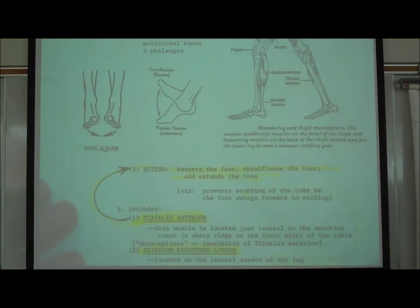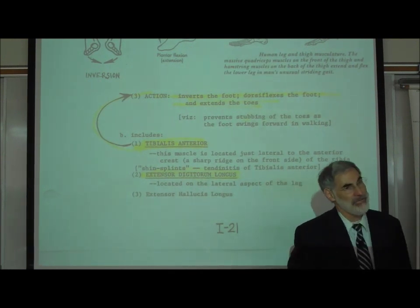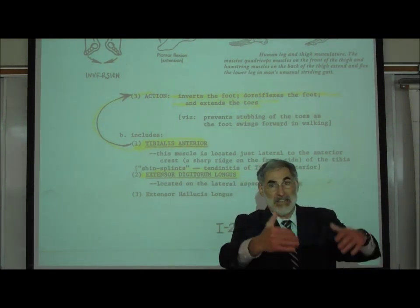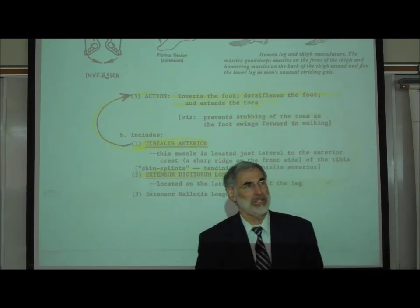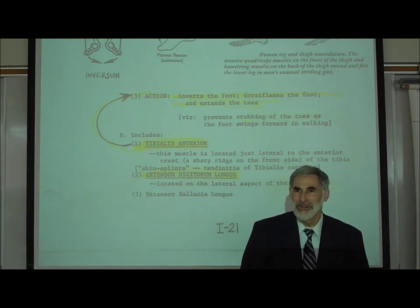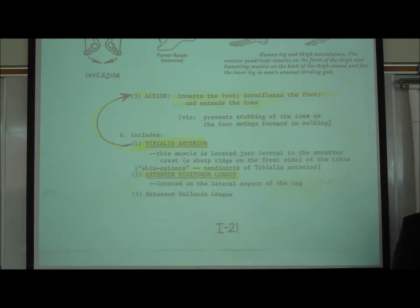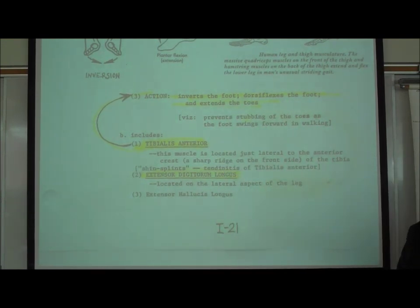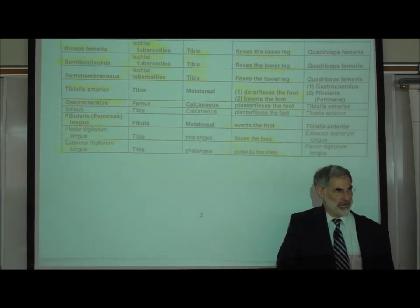At the bottom of I-21, the tibialis anterior. Tibialis anterior is right on the front of the tibia. If you feel your own lower leg, you can all feel the anterior crest, that sharp edge. Just lateral to that sharp edge, big chunk of muscle - tibialis anterior. What does it do? It dorsiflexes, it points your foot up towards the sky. Now it actually does one more thing besides dorsiflex - it also inverts the foot. And I do want you to know both. I wrote both of them on this handout here. It dorsiflexes the foot and inverts the foot.